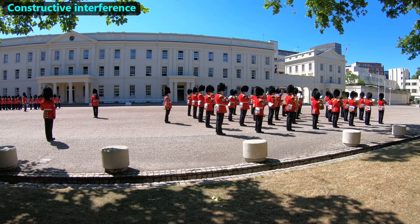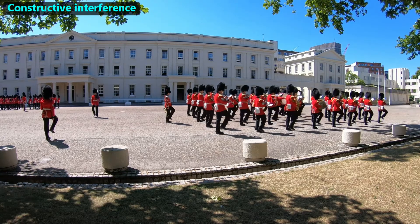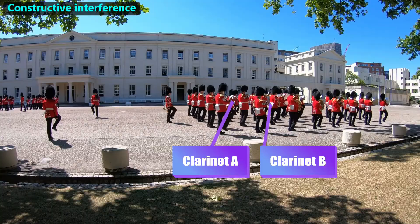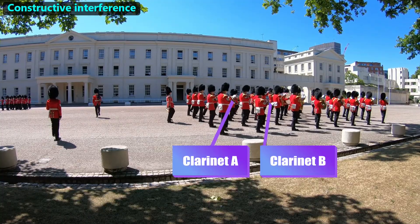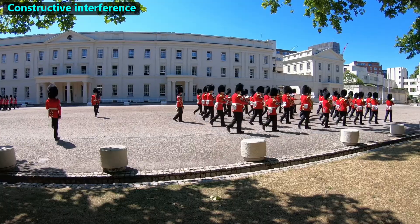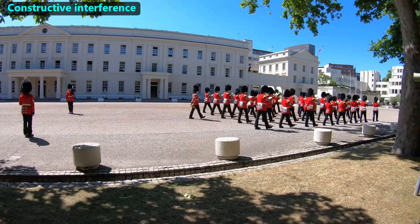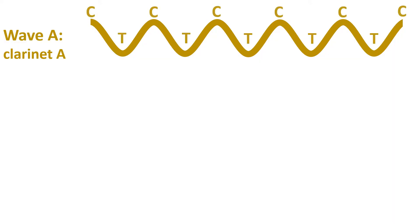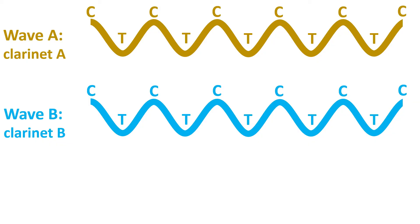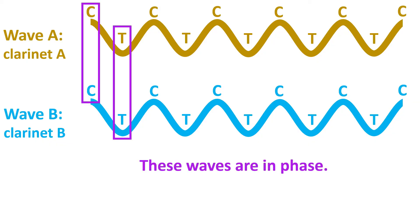The first type of superposition is called constructive interference. To study it, we'll sketch sound waves from two clarinets, as heard by the spectators. Wave A comes from clarinet A, and wave B comes from clarinet B. Since they're playing the same note, their wavelengths are the same. And because they're keeping in rhythm, both sound waves are in phase with each other. That means the crest and the trough of each sound wave happens at exactly the same time.